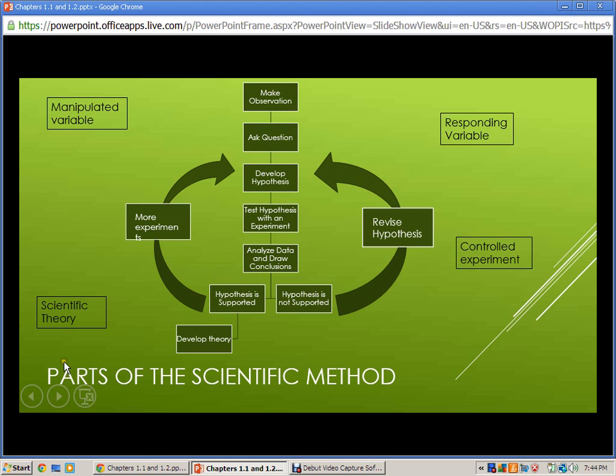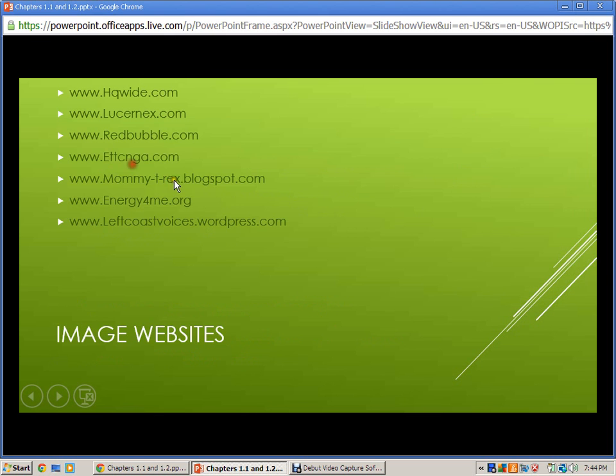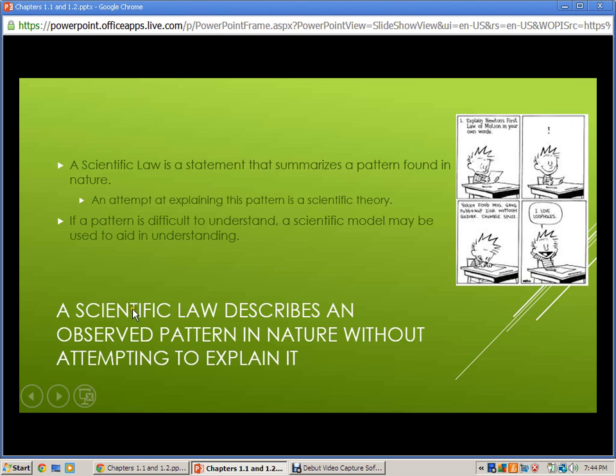All of this could eventually lead to a scientific theory. And a scientific theory is an attempt at explaining a pattern that you see. That pattern is what we call a scientific law. So a scientific law describes an observed pattern in nature without attempting to explain it. The second you try to explain it, you're getting into a scientific theory.